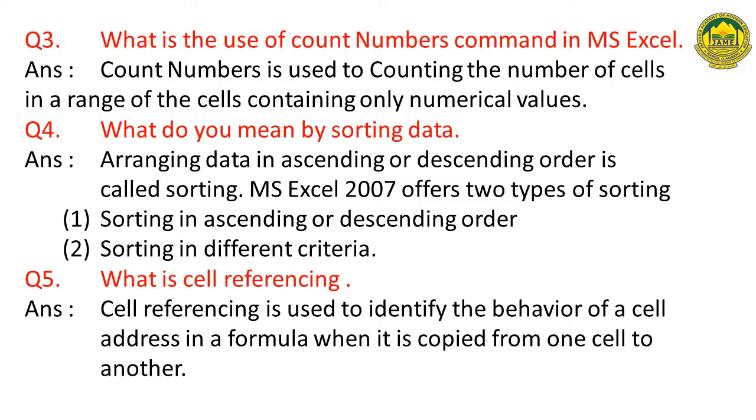Question number four: what do you mean by sorting data? Answer: arranging data in ascending or descending order is called sorting. MS Excel 2007 offers two types of sorting: (1) sorting in ascending or descending order, (2) sorting in different criteria. Question five: what is cell referencing? Cell referencing is used to identify the behavior of a cell address in a formula when it is copied from one cell to another.